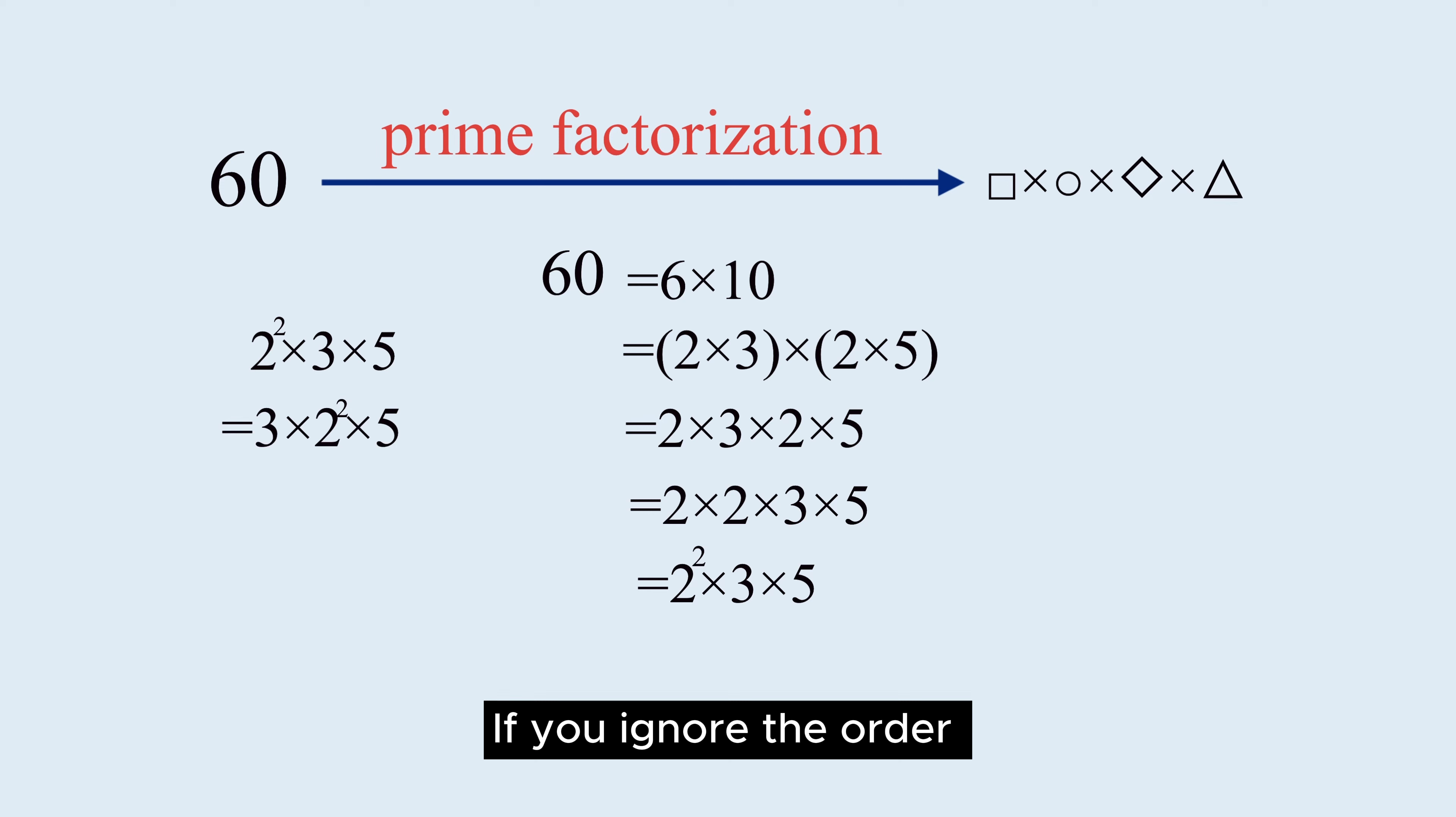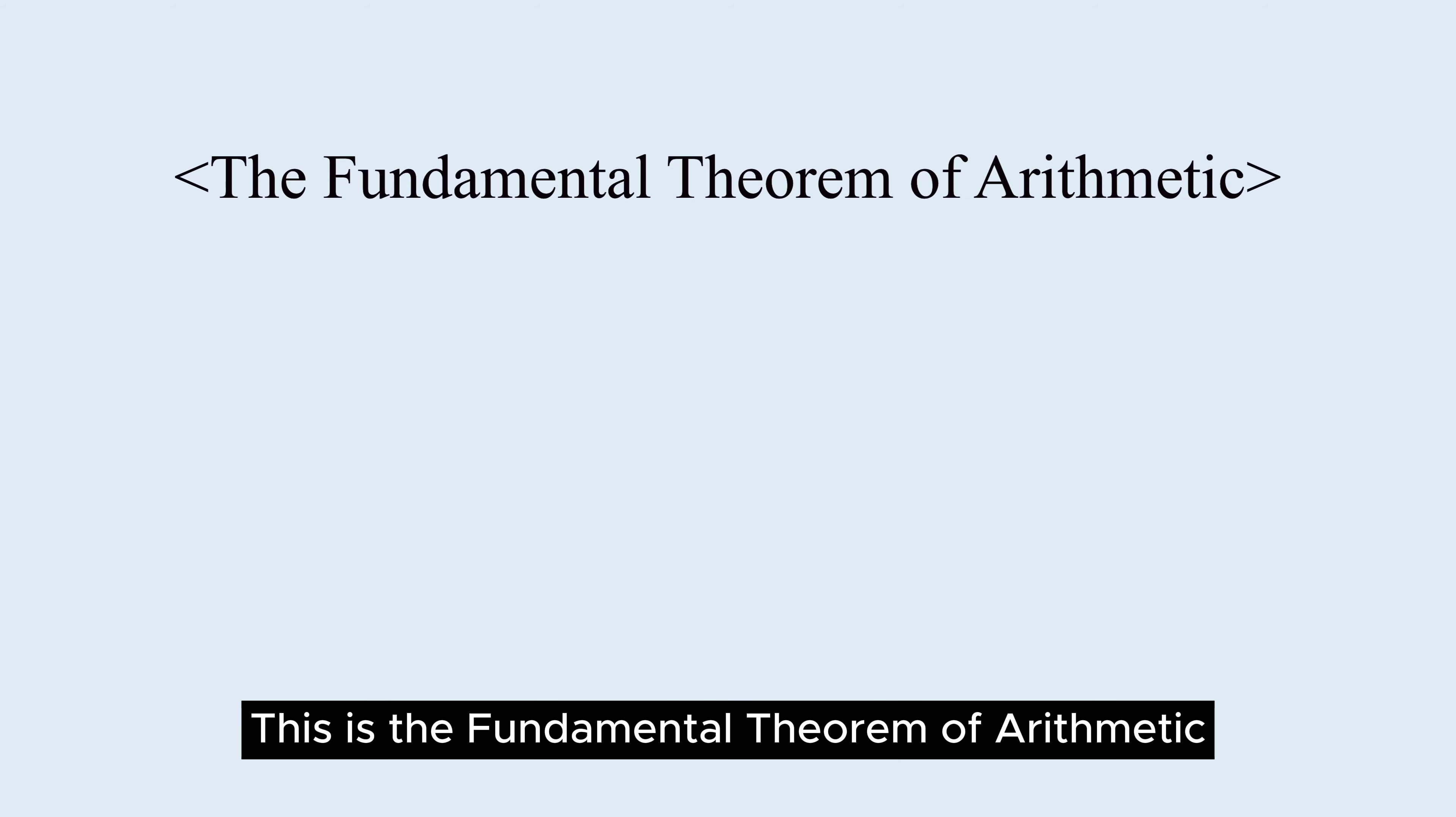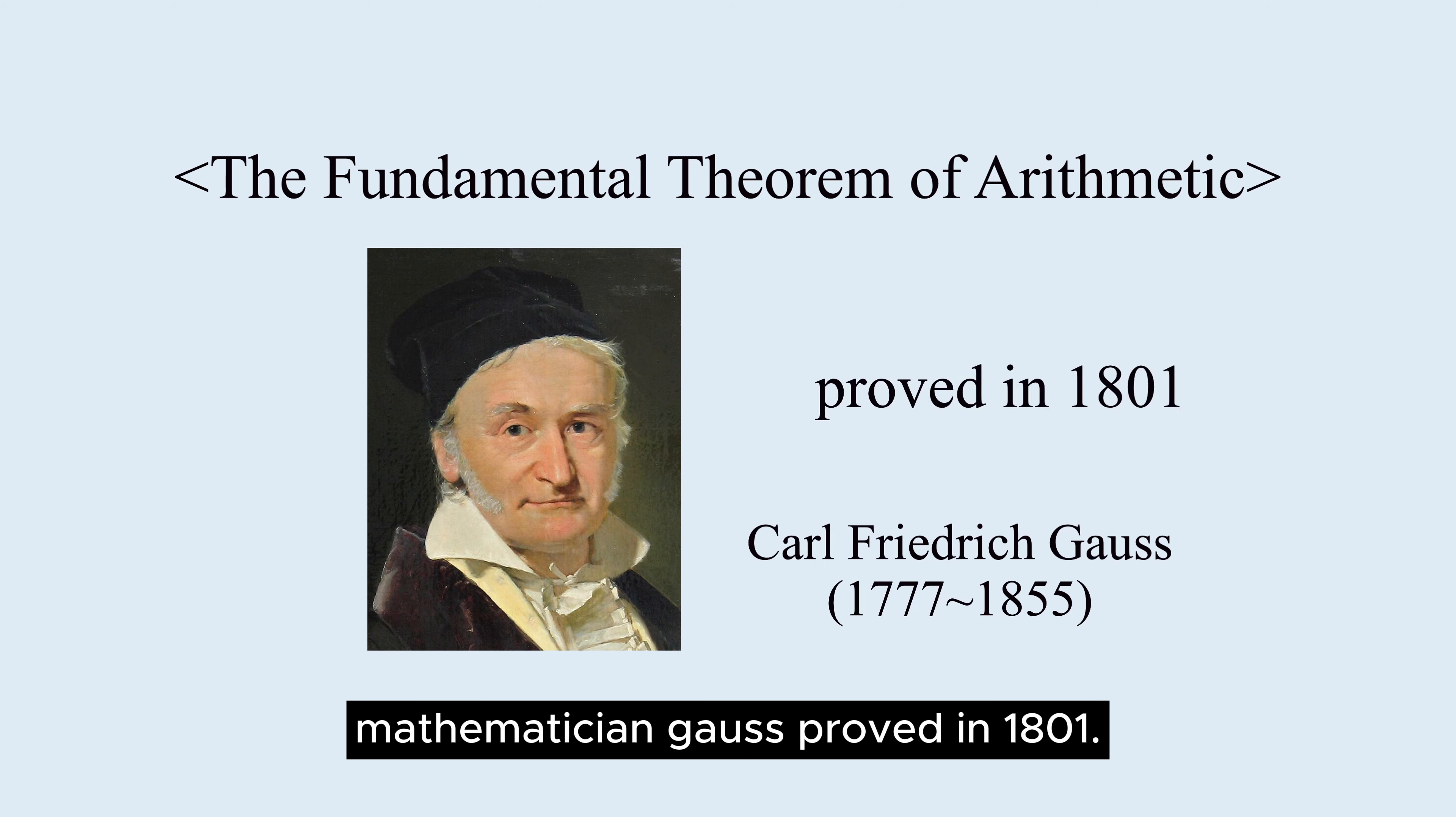If you ignore the order in which 2, 3, and 5 are multiplied, the form is unique. This holds true for any natural number, not just 60. This is the fundamental theorem of arithmetic mathematician Gauss proved in 1801.